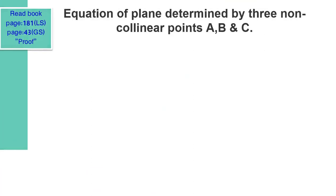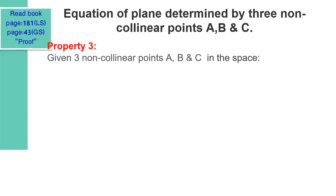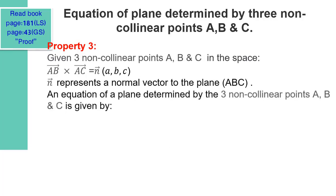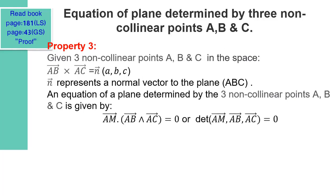Now we have to find an equation of the plane determined by three non-collinear points A, B, and C. Property 3: given three non-collinear points A, B, and C in space, the cross product of vectors AB and AC equals N, which is a normal vector to the plane. An equation of the plane is given by: AM · (AB × AC) = 0, or the determinant of the three vectors AM, AB, and AC equal to 0, where M is a variable point in the plane A, B, C.